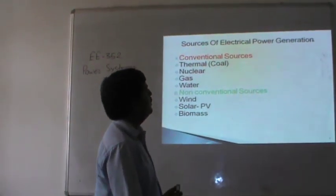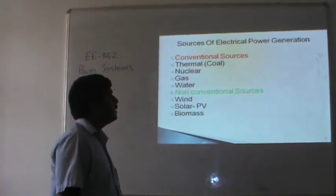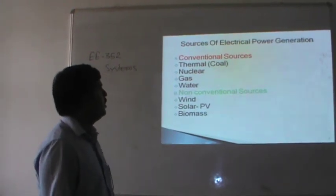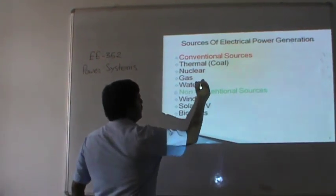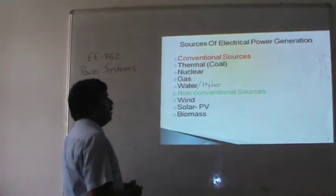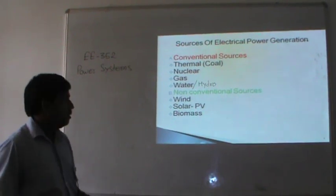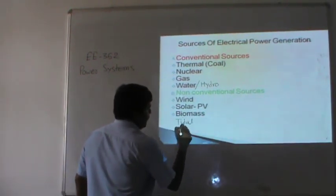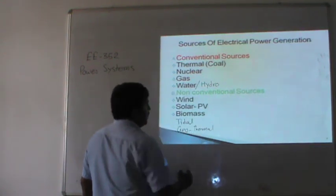The sources of electrical power generation include conventional sources like thermal, coal, nuclear, gas, and water or hydro. Non-conventional energy sources are wind, solar, biomass, tidal, and geothermal.